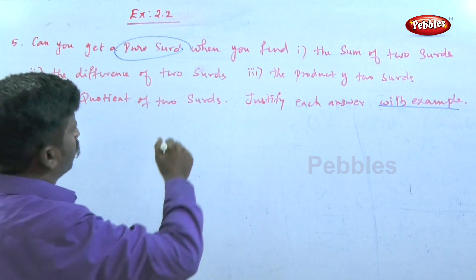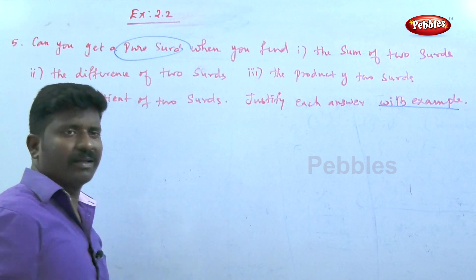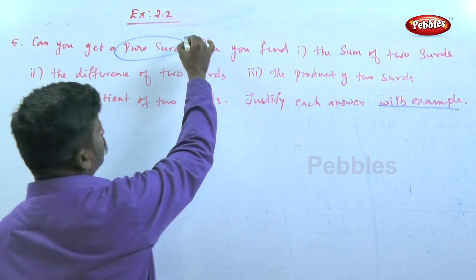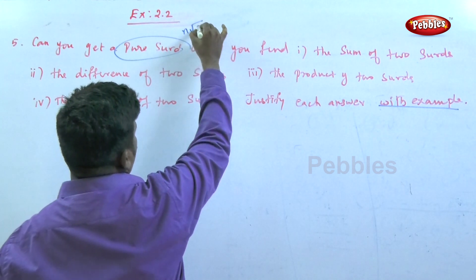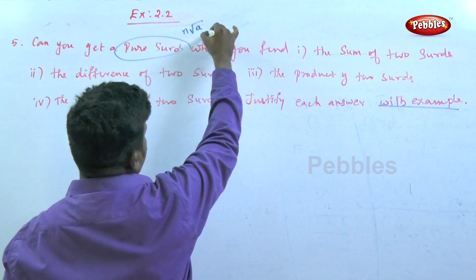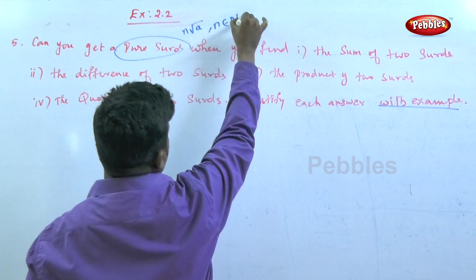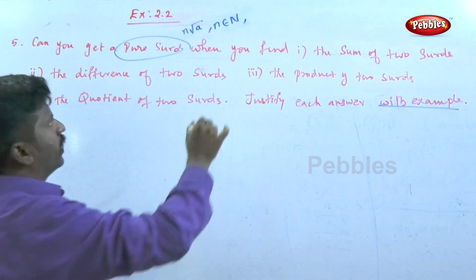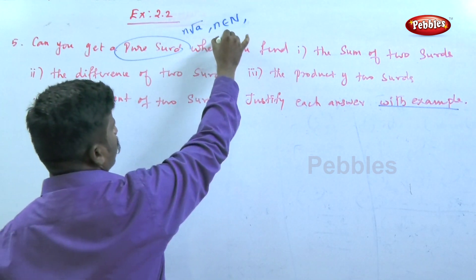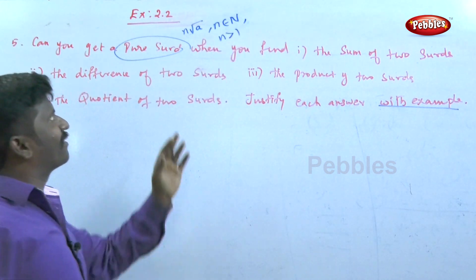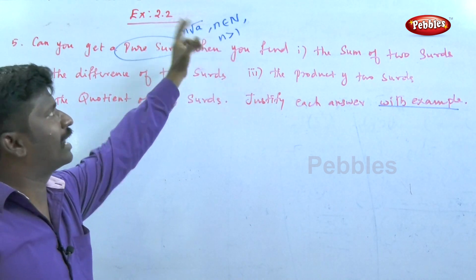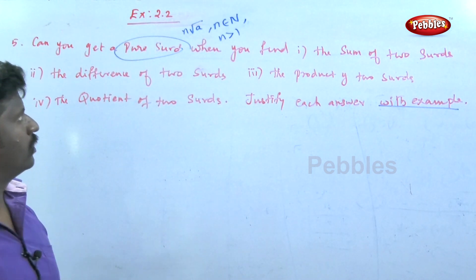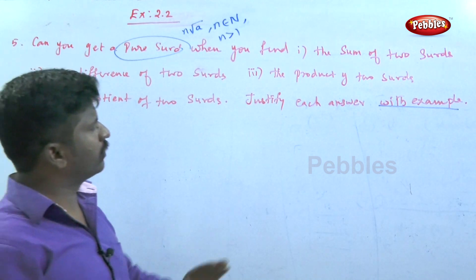First, what is a surd? A surd is the irrational root of a rational number. It is denoted by the nth root of 'a', where n belongs to the natural numbers and n is greater than one.